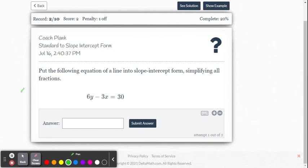Let's do another one. This time we have 6y minus 3x equals 30. So I'm going to add 3x to both sides. So now we have 6y equals 3x plus 30.